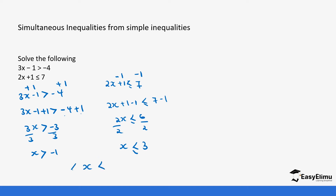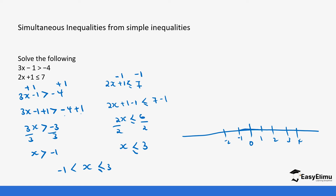Combining the two statements: x is greater than negative 1 and x is less than or equal to 3, so the values of x are between negative 1 and 3. On the number line, we mark negative 1 and 3. Since 3 is part of the values of x, we fill that circle completely, while negative 1 is not, so that circle is left open.